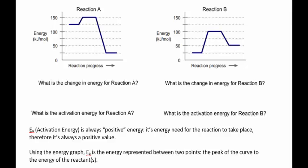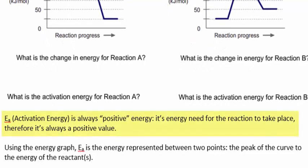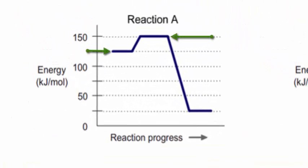Now, we'll determine the activation energy for both reactions using the energy diagram. Activation energy is always positive. It's energy that is needed for the reaction to take place. The activation energy is represented in the diagram between two points, the peak of the curve and the energy of the reactants. So the activation energy for reaction A is 25 kilojoules per mole.